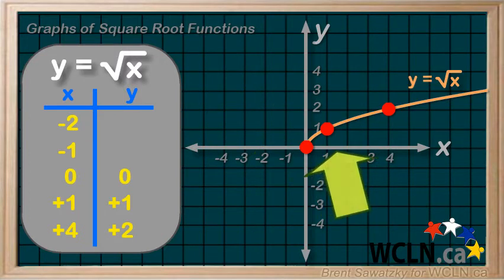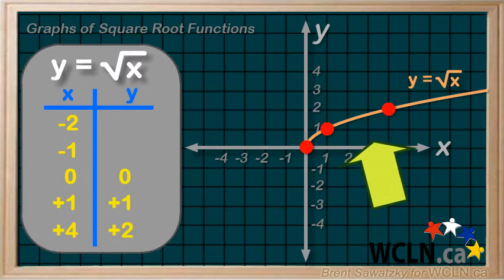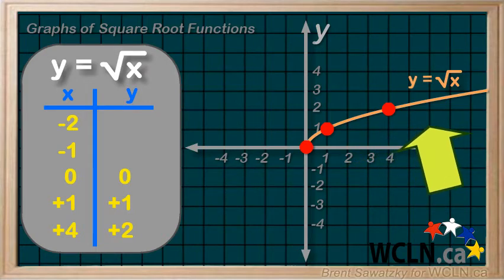Now as we go positive, all is good. The square root of one is one, the square root of four is two, square root of nine is three, and so on.